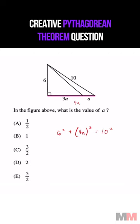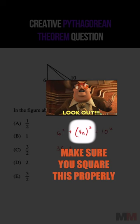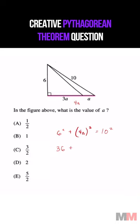Simplifying some stuff, that's going to be 36. And don't forget, you got to square 4 and A. So that's going to be 16A squared equals 100.